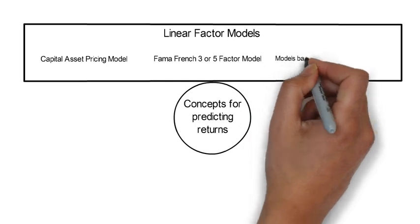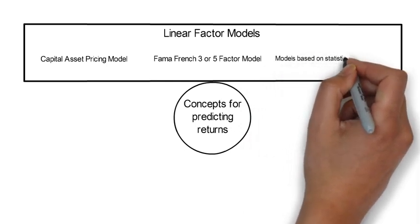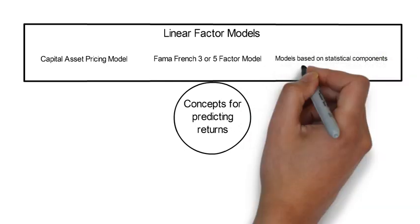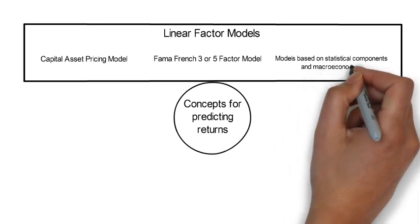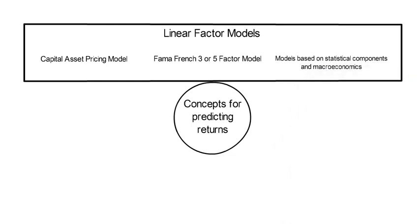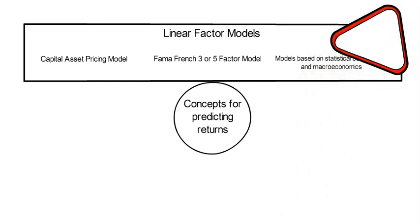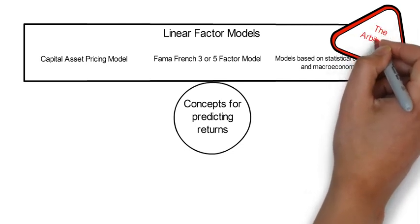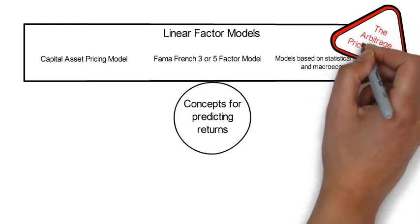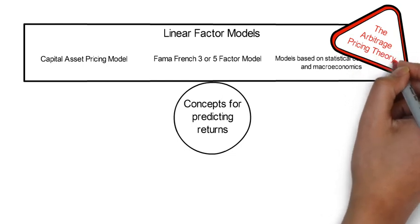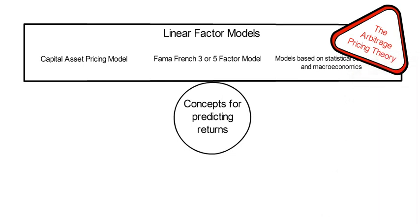Other linear factor models that we talk about in this course are based on statistical principal components, or on observed macroeconomic factors. All of these fundamental financial return predicting models are special cases of what is called the APT, meaning the Arbitrage Pricing Theory.